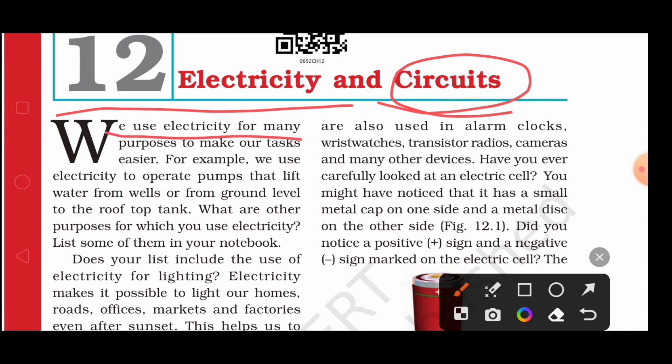We use electricity for many purposes to make our tasks easier. For example, we use electricity to operate pumps that lift water from wells or from ground level to the rooftop tank. In the night, without sunlight, we use electric bulbs.